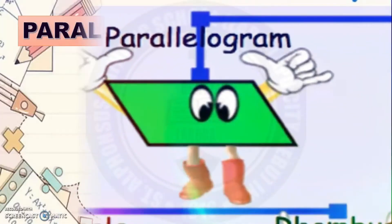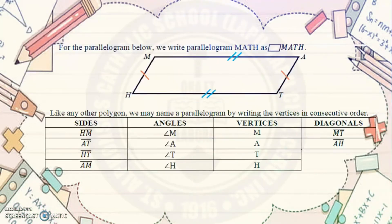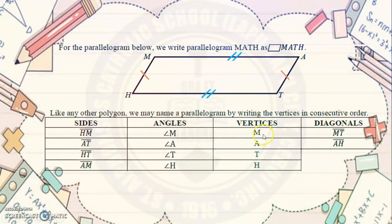One type of a quadrilateral is a parallelogram. A parallelogram is a kind of quadrilateral with two pairs of parallel sides. It has four angles, sides, and vertices. For a parallelogram, we write it as parallelogram MATH. Like any other polygon, we may name a parallelogram by writing the vertices in consecutive order: M, A, T, H. The same applies to the angles: angle M, angle A, angle T, and angle H.